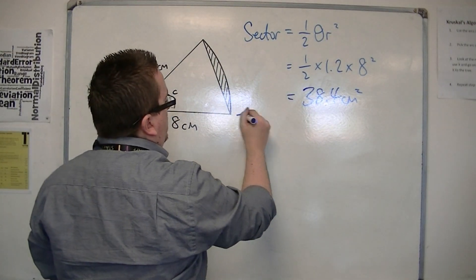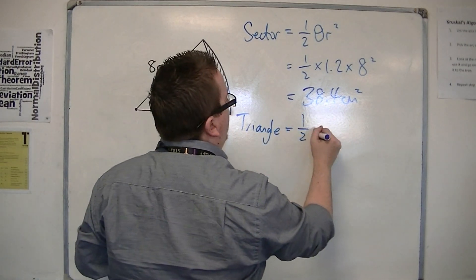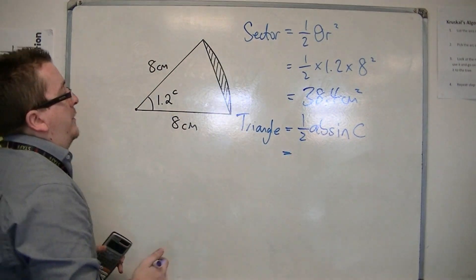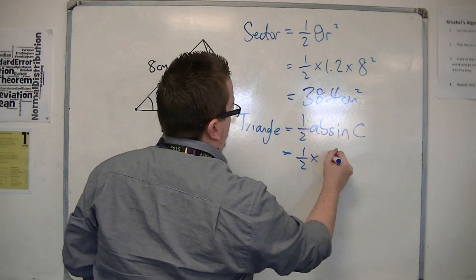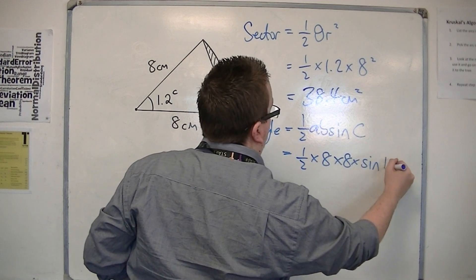Now the triangle is equal to half AB sine C. That's the area of a triangle. So that's one half times 8 times 8 times sine of the angle, 1.2.